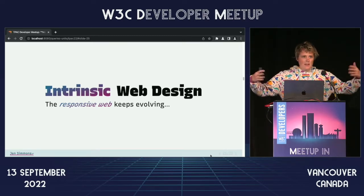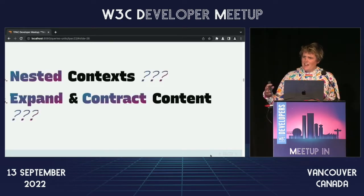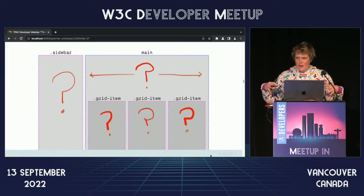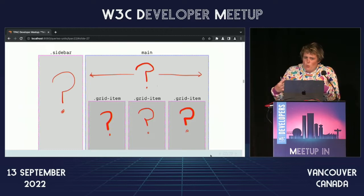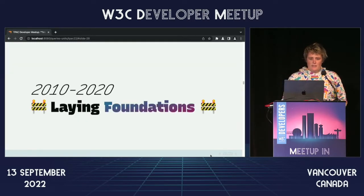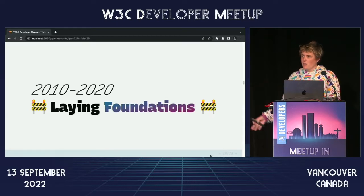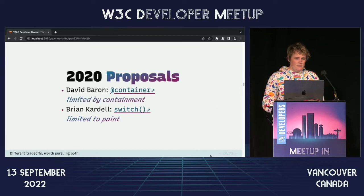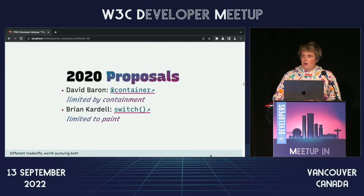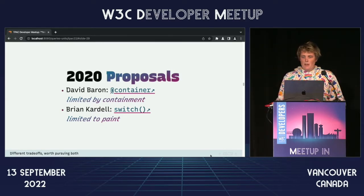It's still responsive and intrinsic — we're building on something. But wait: nested contexts with content that expands and contracts? That sounds like we're back to that same problem. We've got these different contexts now, and we want to be able to measure them and respond to them, and they nest. Over the last decade there have been a lot of people laying the groundwork. And in 2020, David Barron and Brian Cardell both put forward really interesting proposals of how we might move forward with something like this.